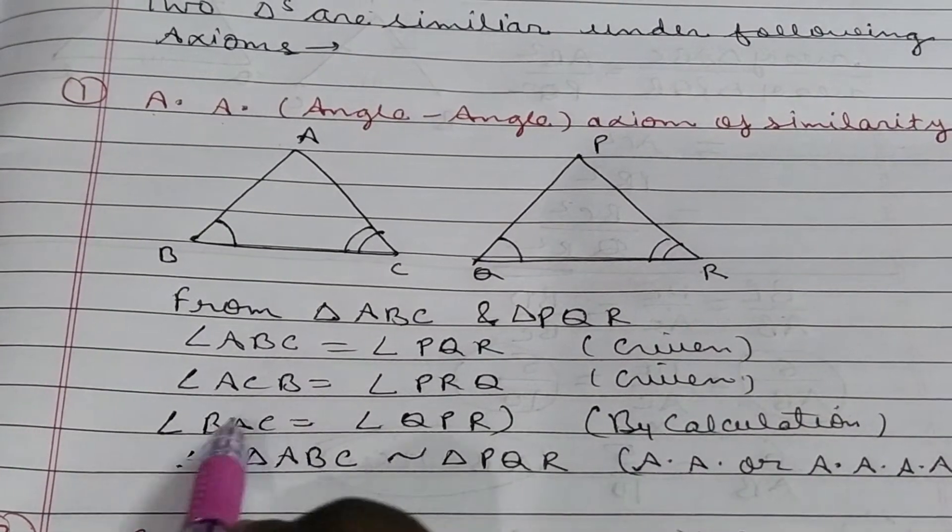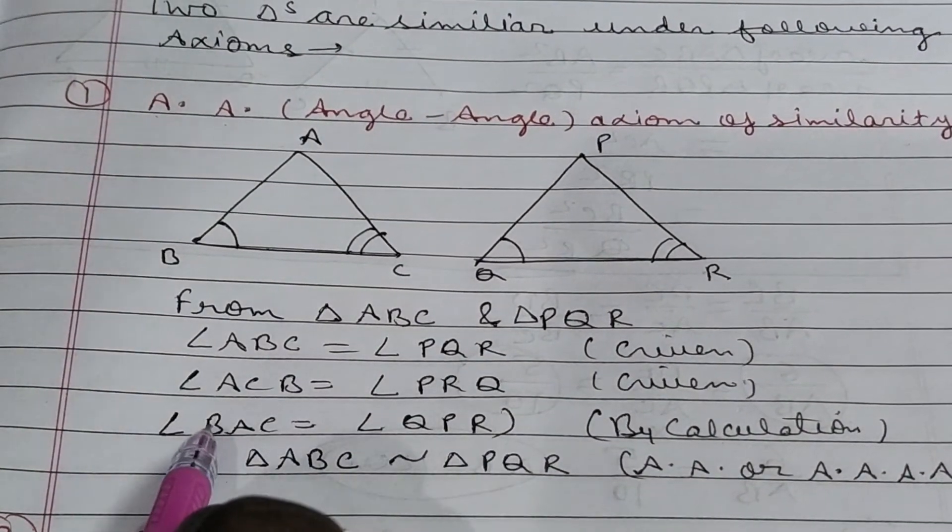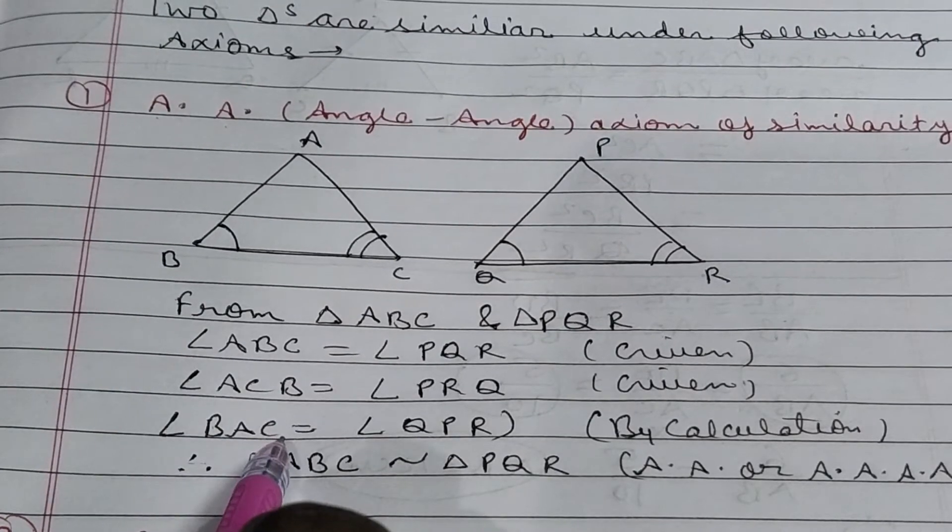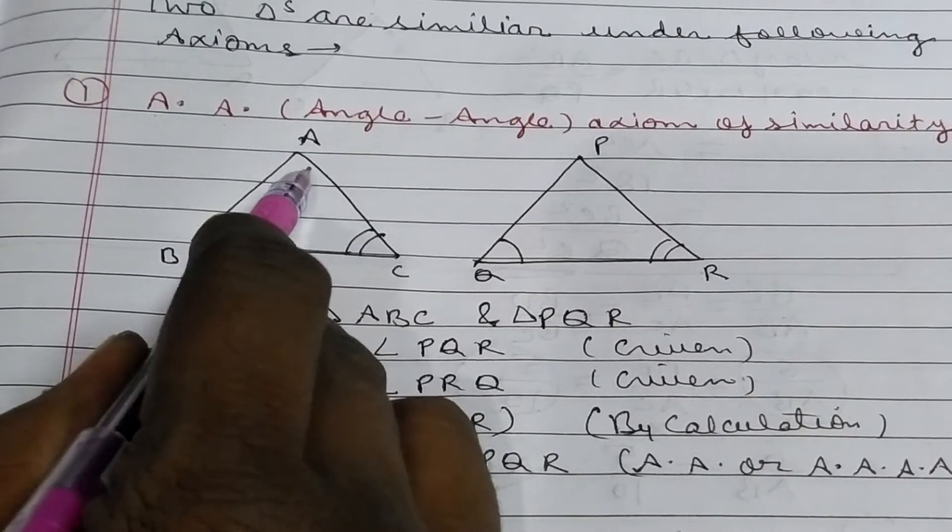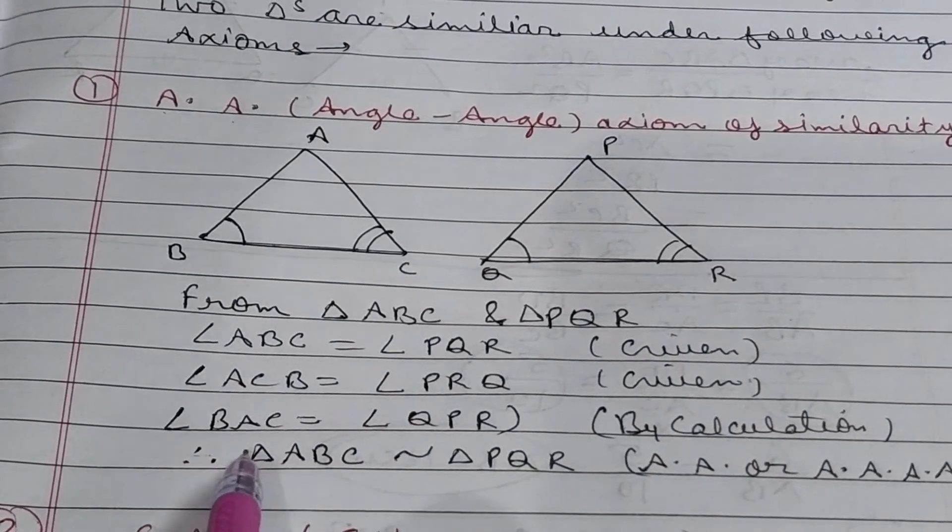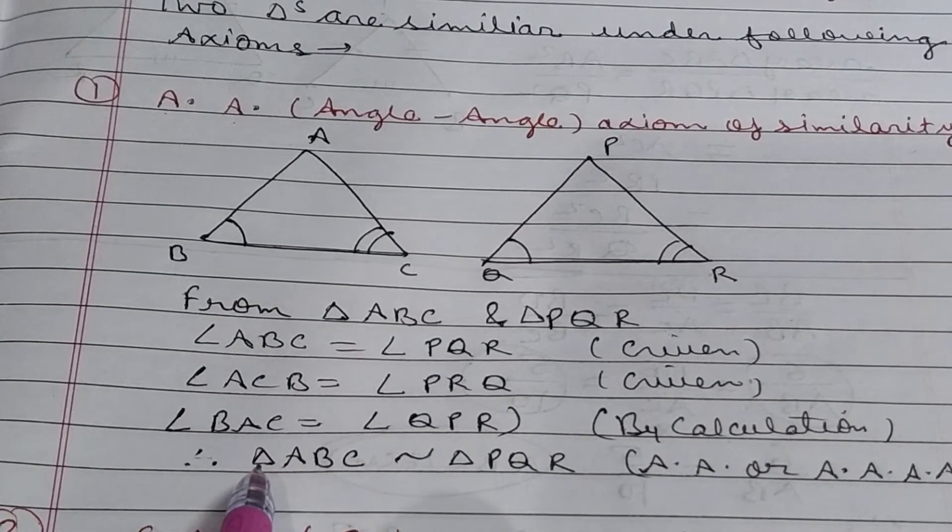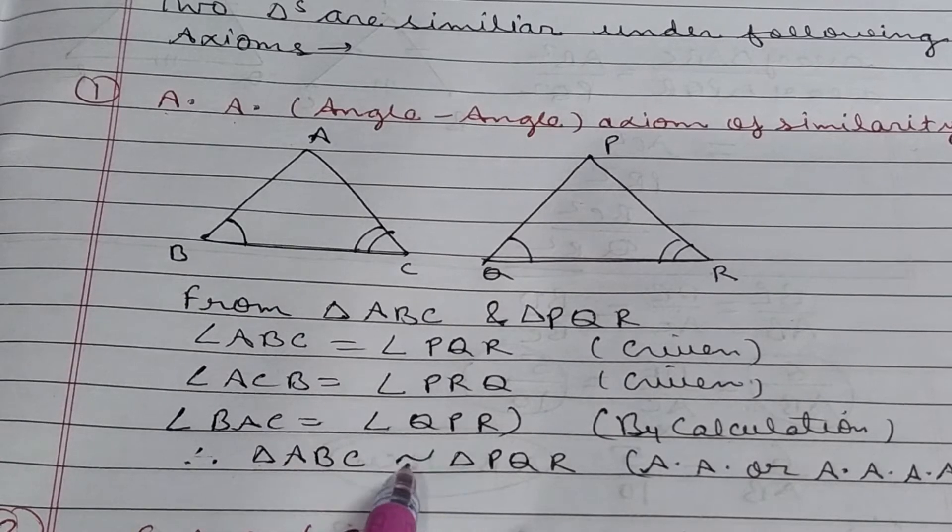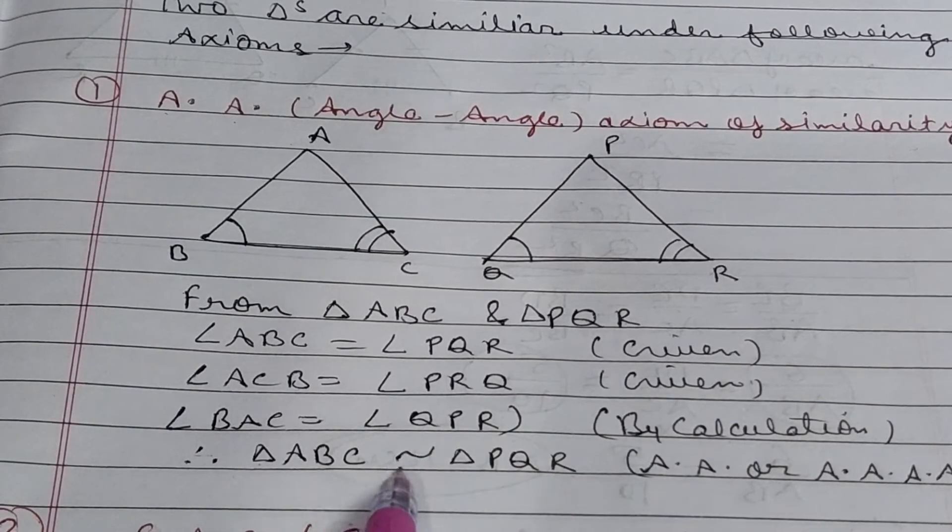By calculation, you can say third angle will also equal. Always write angle in three letters. If you have to write angle A, you will write it BAC. It will be better. Then, in a last line, you will represent triangle ABC similar to triangle PQR. This is similar mark.